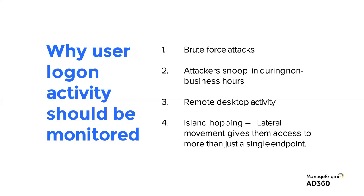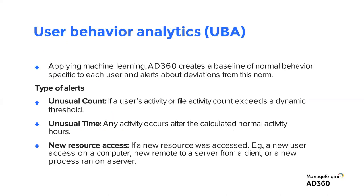When your system goes beyond just correlating and tracks what activity happens after — 100 logon failures in under a minute, followed by a successful logon, access to a critical file or folder, installation of a malware, then data exfiltration — that's the kind of contextual insight you should be getting. With island hopping, an attacker doesn't remain in one endpoint; they move until they compromise the entire domain admin credentials.